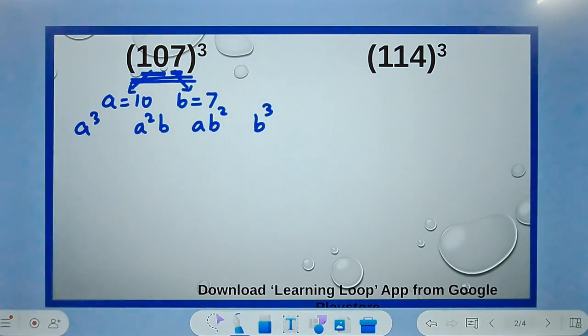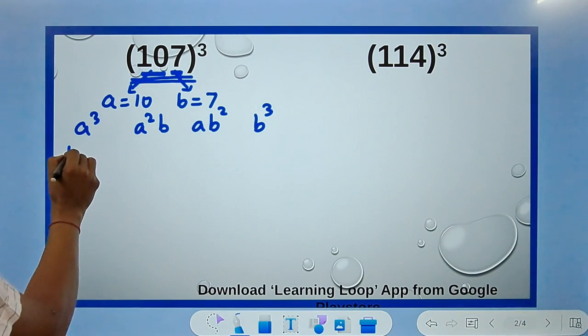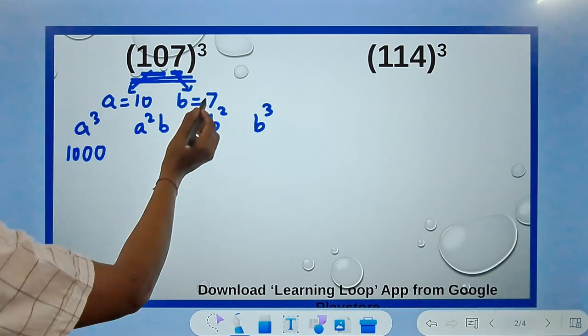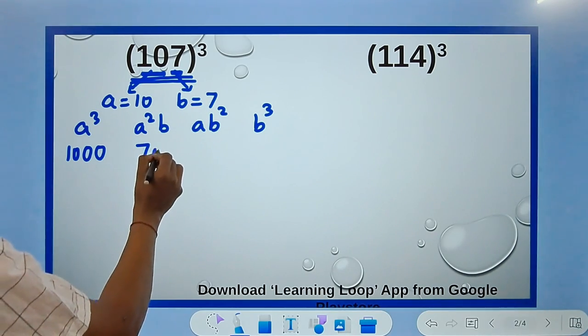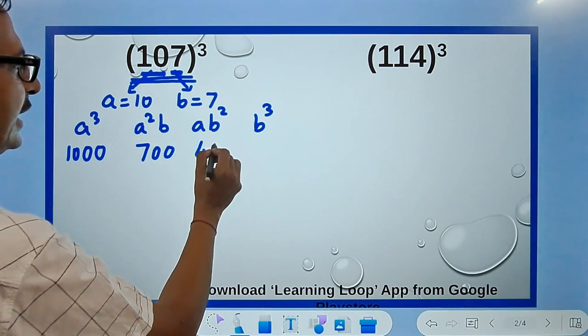a is 10, so 10³ is 1000. a² is 10² which is 100, times 7 is 700. Then a times b², 7² is 49 times 10 is 490. And then 7³ is 343.